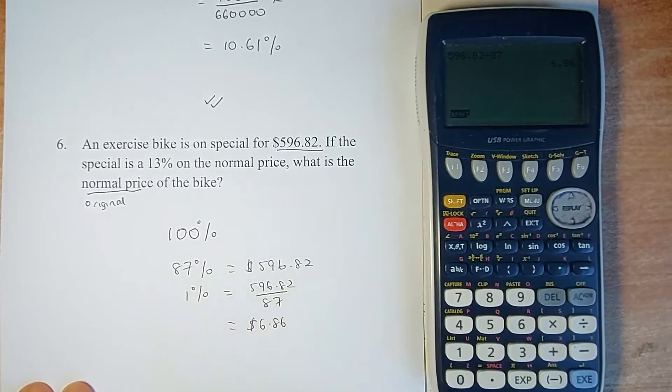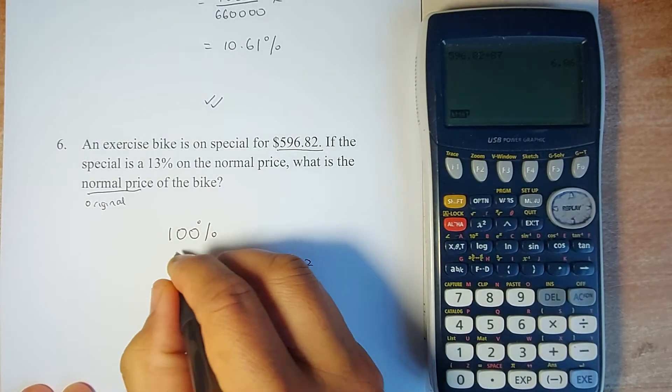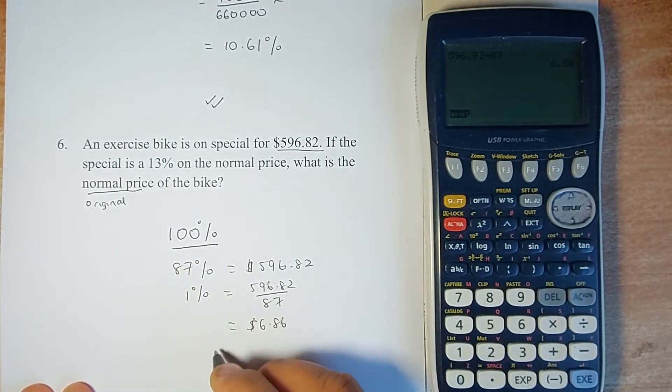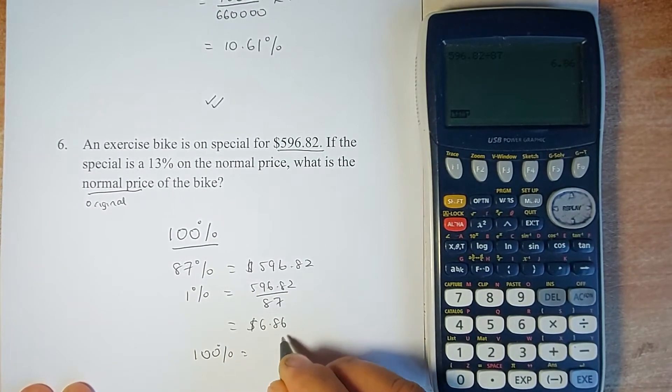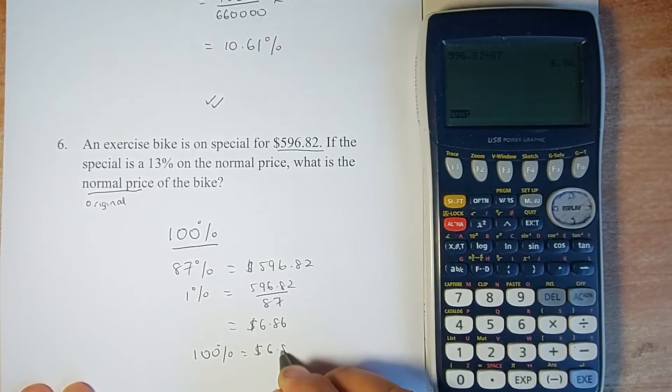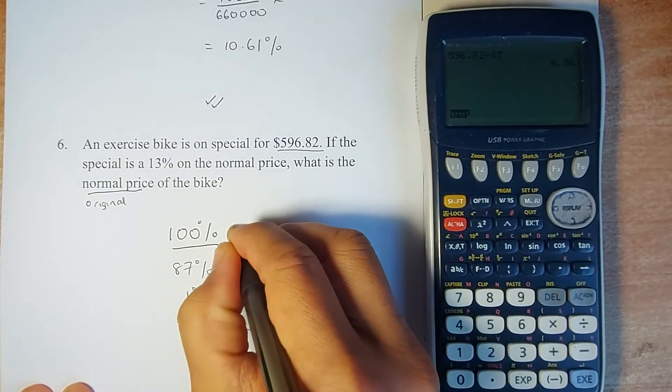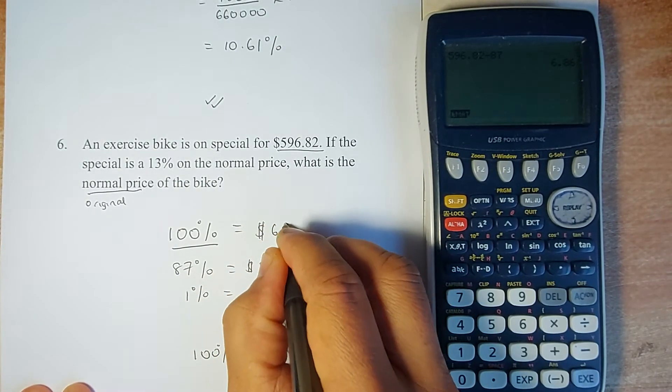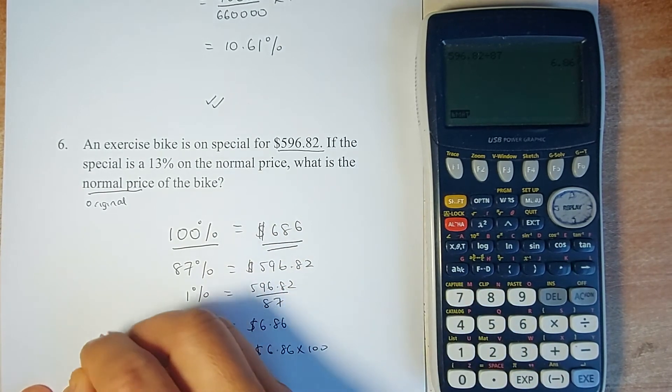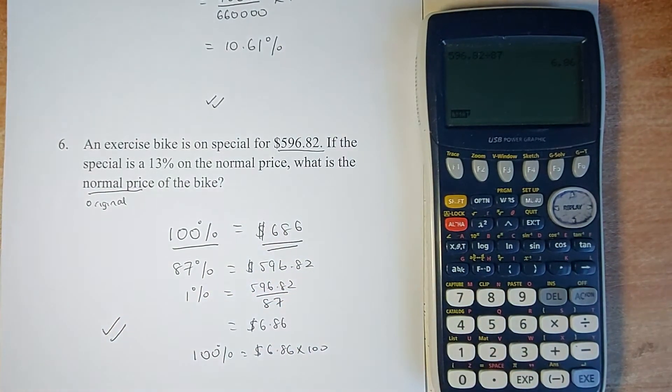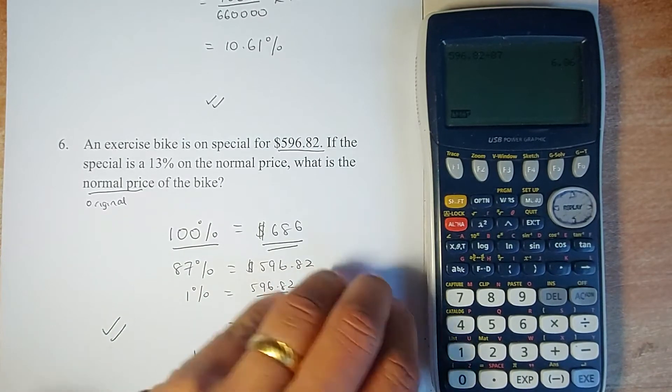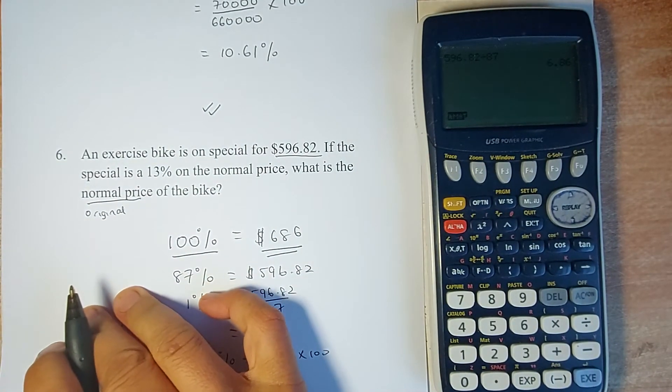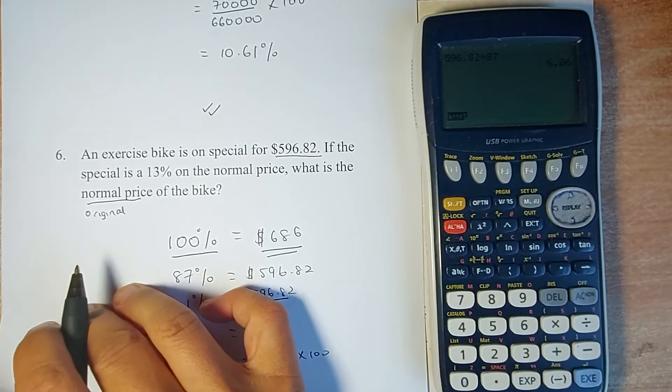But because they asked you for 100%, very simple: 100% is going to be $6.86 multiplied by 100, and the answer is $686. That will give you another two marks in the exam.